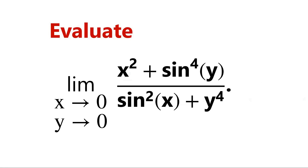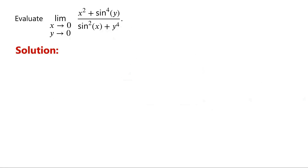Evaluate the limit. This is a two-variable limit. Clearly, directly substituting x equals 0 and y equals 0 gives the indeterminate form 0 over 0. Since this is a limit of a function of two variables, we cannot use L'Hôpital's rule, as L'Hôpital's rule only applies to functions of a single variable. Then, how to evaluate the limit?